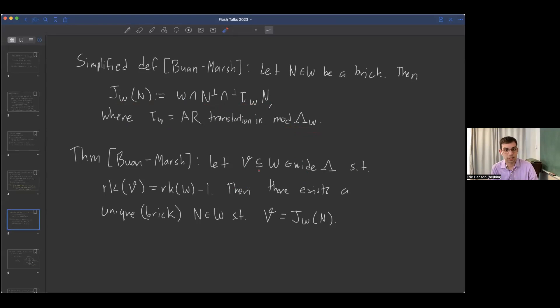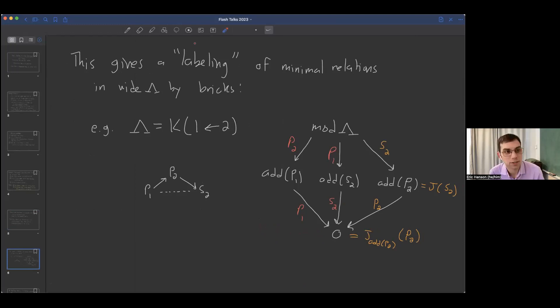This theorem, which led to the unique completion result that Bethany showed us, is that if I take two wide subcategories V and W, and their rank differs by only one, then there is a unique brick in the bigger wide subcategory so that we can write the smaller wide subcategory as this tau perpendicular subcategory of that brick.